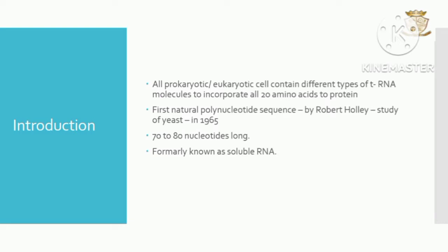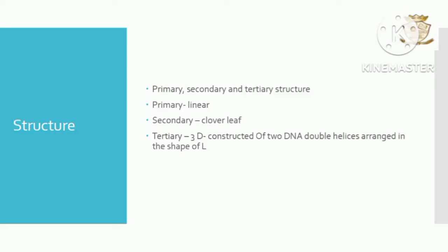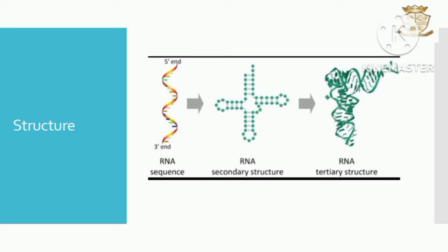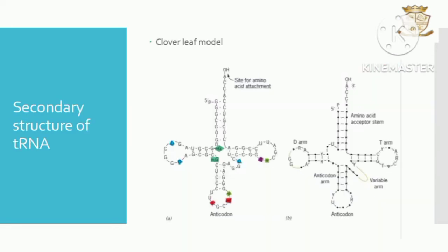tRNAs are seventy to eighty nucleotides long and were formerly known as soluble RNA. The tRNA exists as primary, secondary, and tertiary structures. The primary structure is linear, the secondary structure is the cloverleaf, and the tertiary structure is a 3D structure composed of two RNA double helices arranged in the shape of an L. This is the cloverleaf model of tRNA.